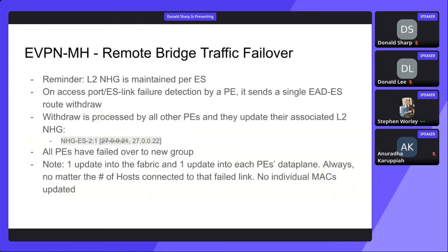For the L2, L3 next hop group use case — remote bridge traffic failover: the L2 next hop groups are maintained per ES, so every single Ethernet segment across the fabric creates a L2 next hop group. On port or ES link failure detection by the provider edge, it sends a single EAD ES route withdrawal. From this route withdrawal we update the underlying L2 next hop group construct, and every single remote PE will failover to the correct group. Note here that this is a single update into the fabric, and then one update into each provider edge's data plane, no matter the number of hosts connected or hosts that failed the link — no individual MACs have to be updated. It is a single command into the data plane.